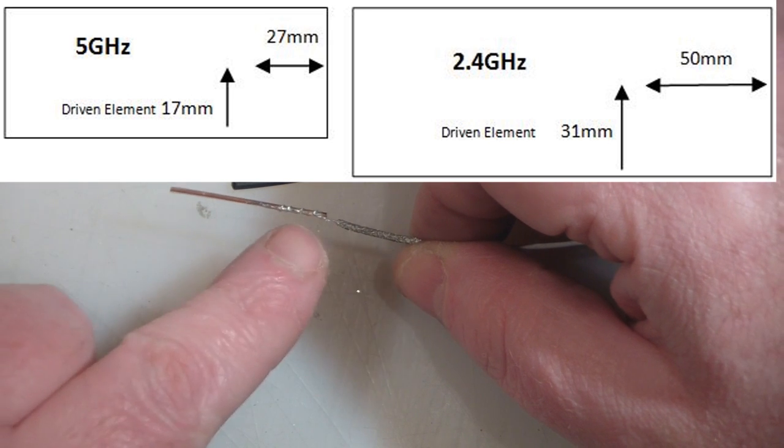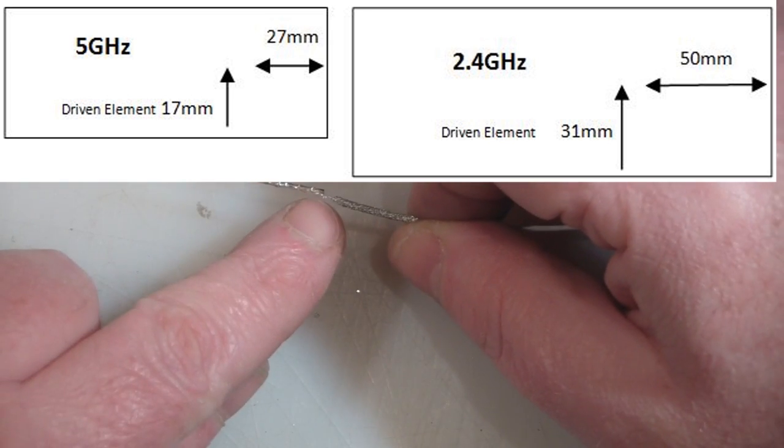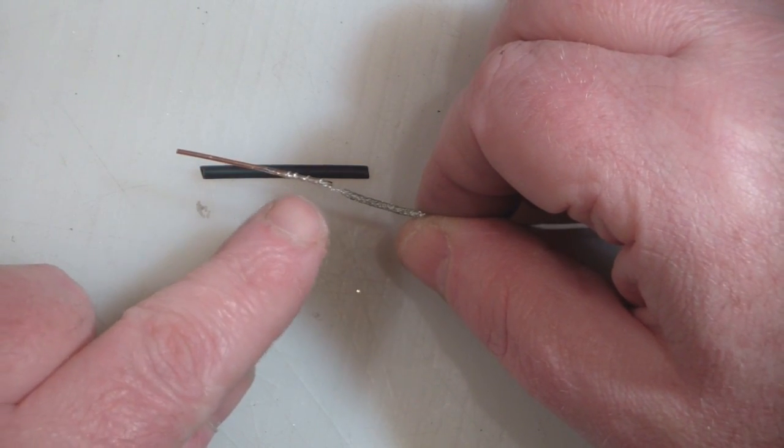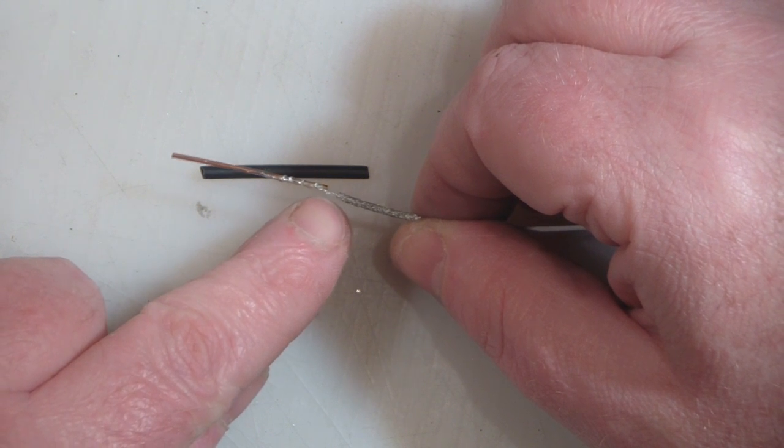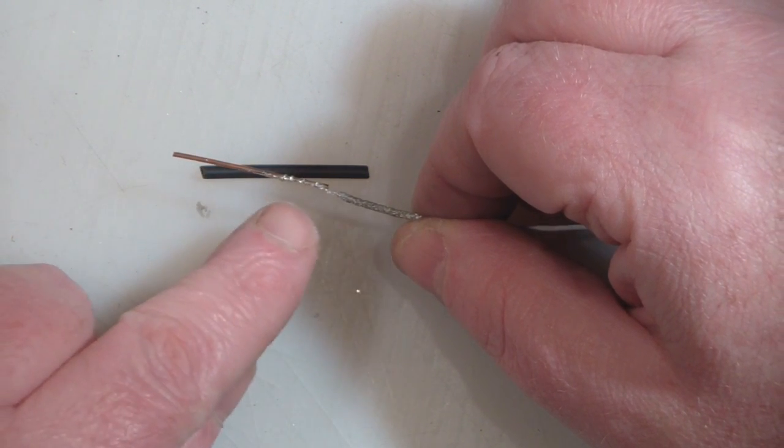I've left a little bit of a gap here where it's insulated from this outer braid so it's not touching. I'm going to put some heat shrink tubing over the top of that, and then measure it off to its exact 31mm.